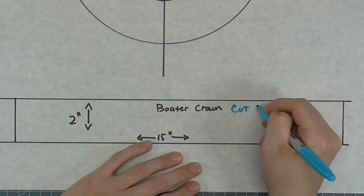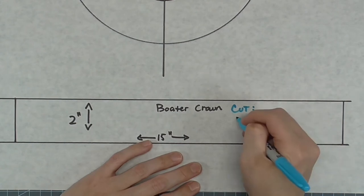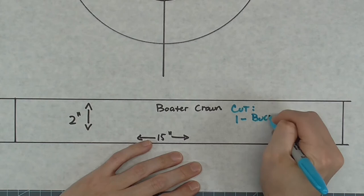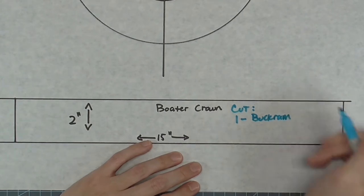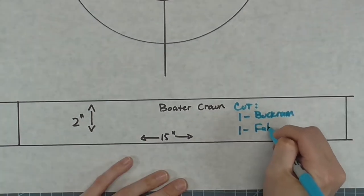On the crown, cut one of buckram and one of the fashion fabric with added seam allowance. More about how to cut the fabric for the boater will be explained in the construction video, since it's a little confusing right now.